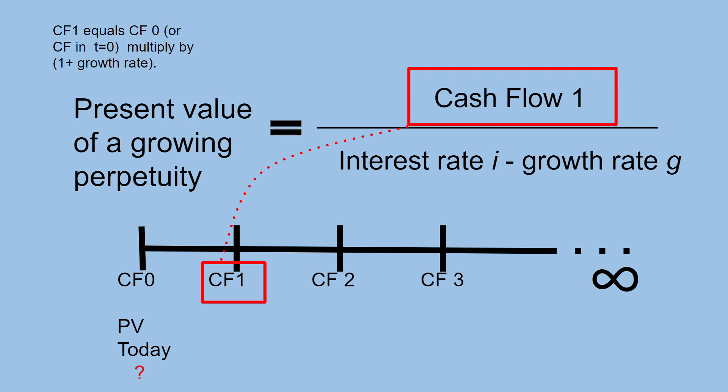Cash flow 1 equals cash flow 0 — the cash flow at time t equals 0 — multiplied by (1 plus growth rate).